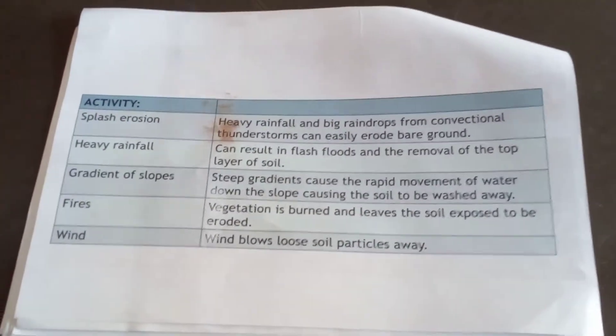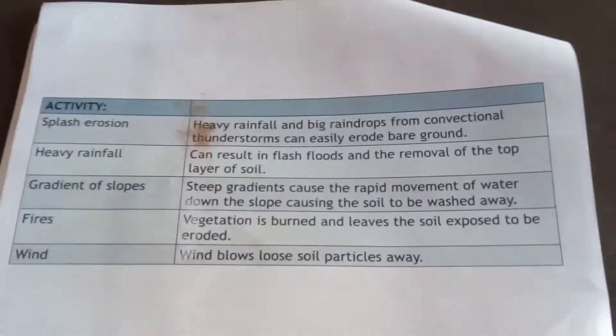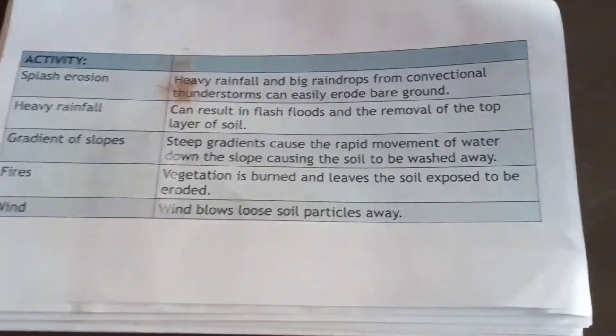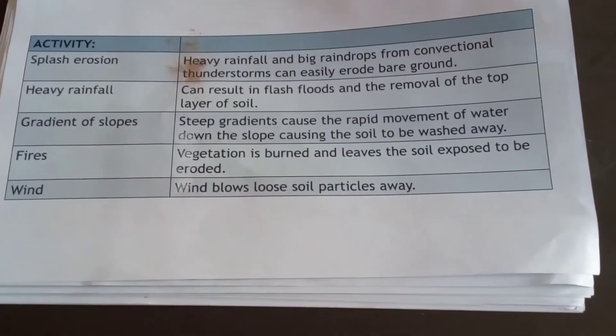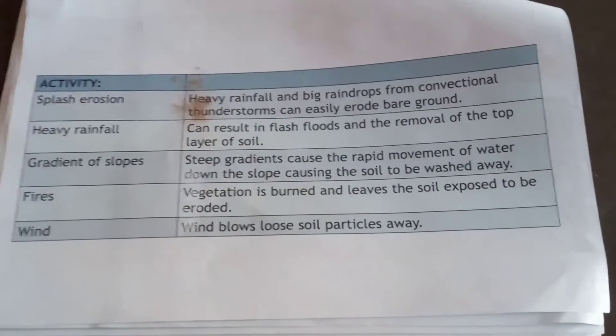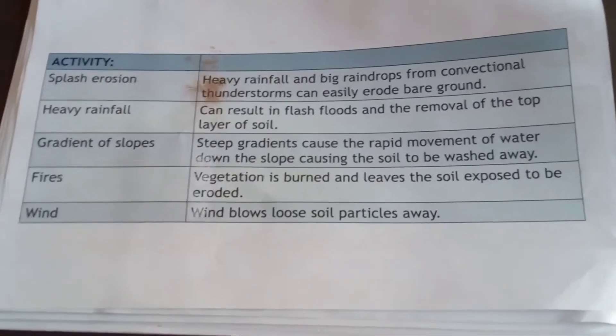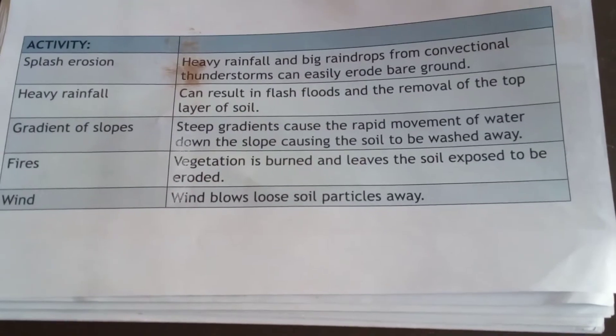Splash erosion occurs when heavy rainfall hits the ground, especially with large drops — it forms small rills within the ground. When these rills are formed, soil is also being eroded by the splash of the water. Over time, if the rainfall is very strong, it can lead to degradation of the environment as soil is washed from one point to another. Heavy rainfall is therefore also a cause of soil erosion, removing the top layer especially if the land is left bare.